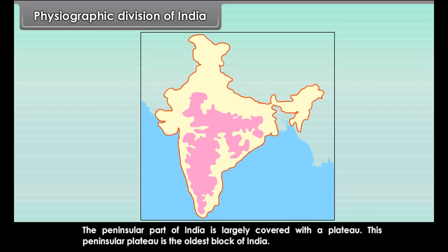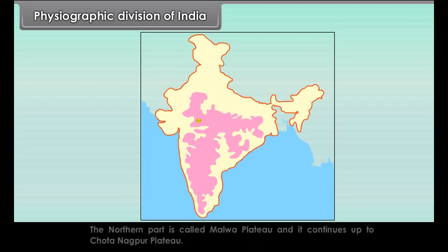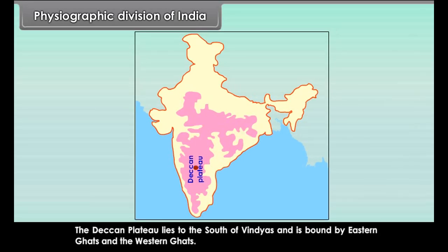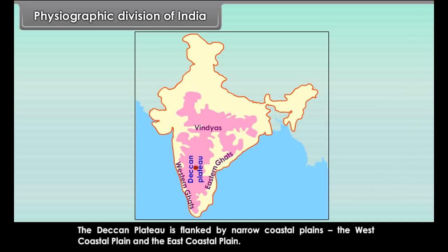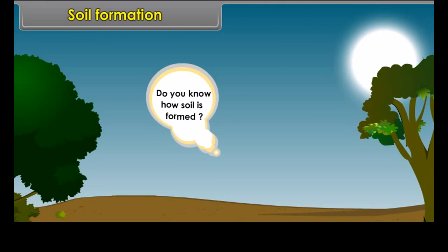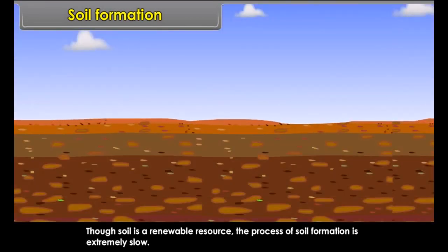India is a peninsula, which means all three sides of southern India are covered by water. The peninsula part of India is largely covered with a plateau. The northern part is called Malwa Plateau and it continues up to Chhota Nagpur Plateau. The Deccan Plateau lies to the south of the Vindhyas and is bounded by the Eastern Ghats and the Western Ghats, flanked by narrow coastal plains.